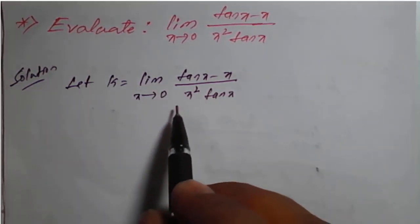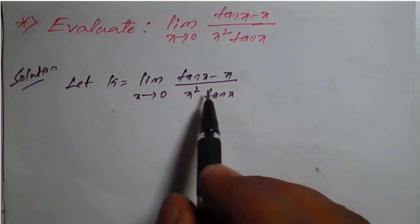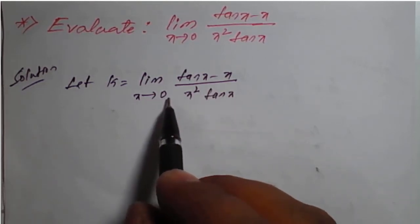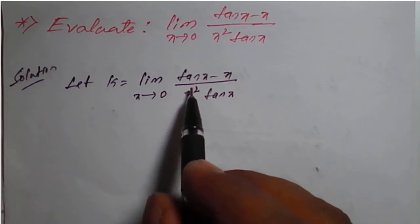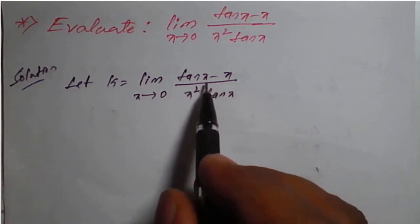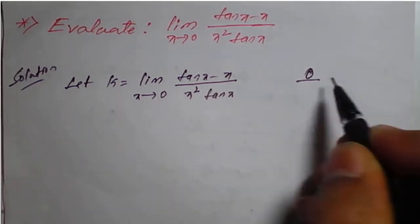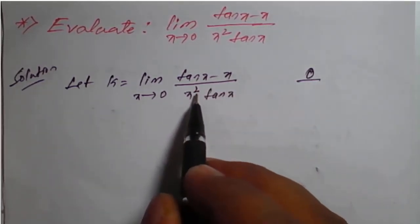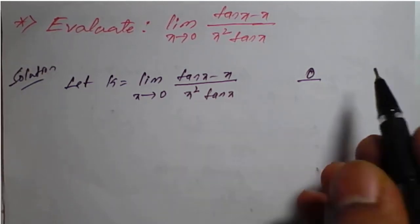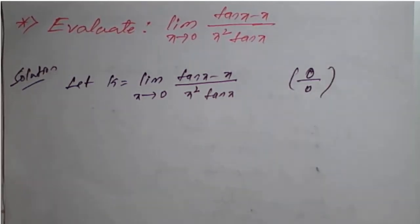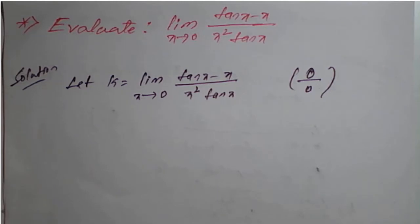We need to check first the given limit as x tends to 0. If we replace x equal to 0: tan of 0 is 0, and 0 minus 0 is 0 in the numerator; 0 squared is 0 and tan of 0 is 0 in the denominator. Therefore it is of the form 0 by 0, so we can apply L'Hôpital's rule here.